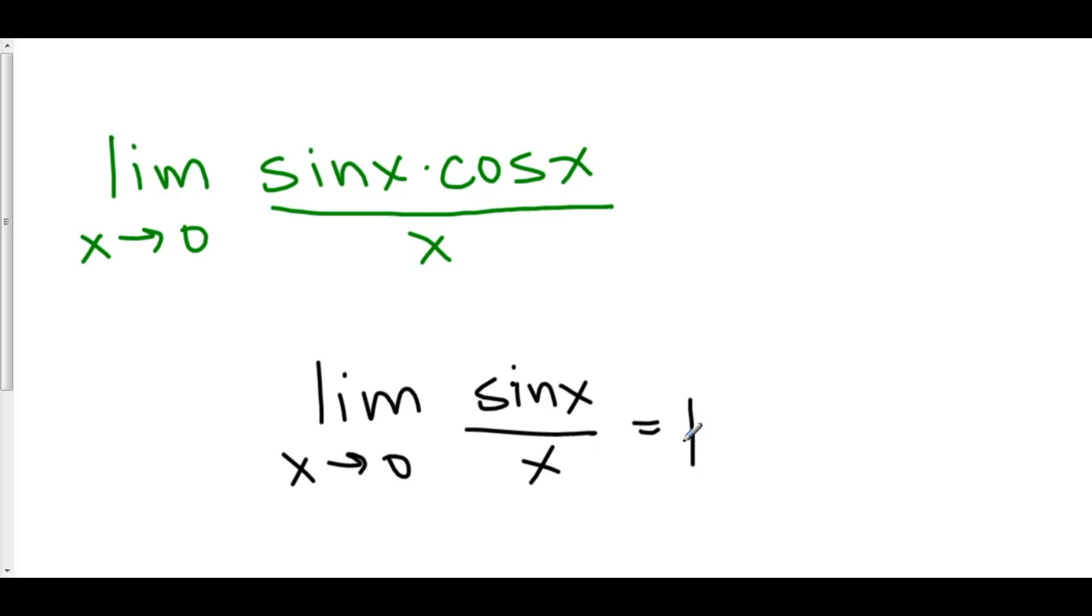Memorize this, because this is the only limit that does not follow the three rules for taking limits. This one you just have to have memorized. But once you have it memorized, you can pull it out and use it whenever you want to. So, for example, let's take the limit as x approaches zero of sine of x times cosine of x all over x.